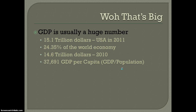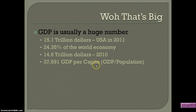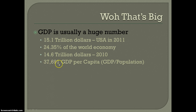To show you that there's growth — in 2010 it was 14.6 trillion dollars, so it increased by 500 billion dollars going from 2010 to 2011. Another way to look at it is GDP per capita. What this means is for every person in the United States, the GDP is thirty-seven thousand six hundred ninety-one dollars.